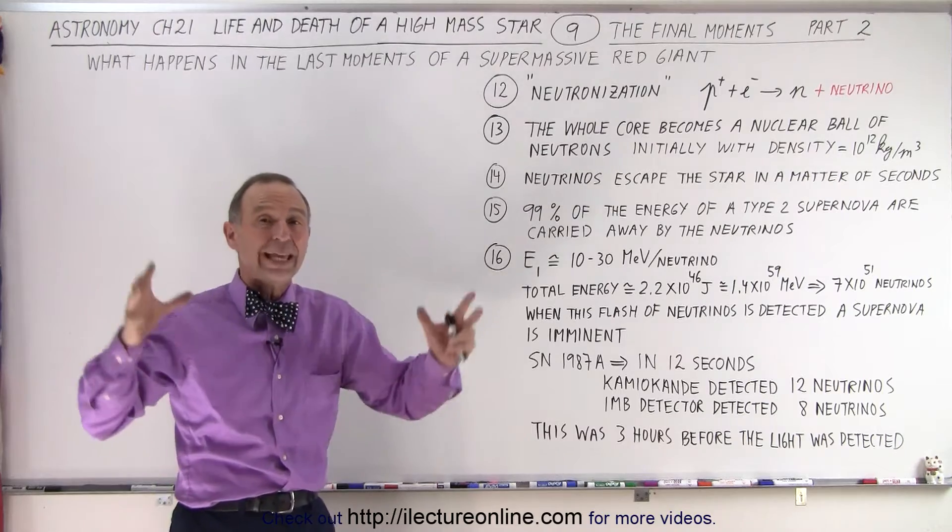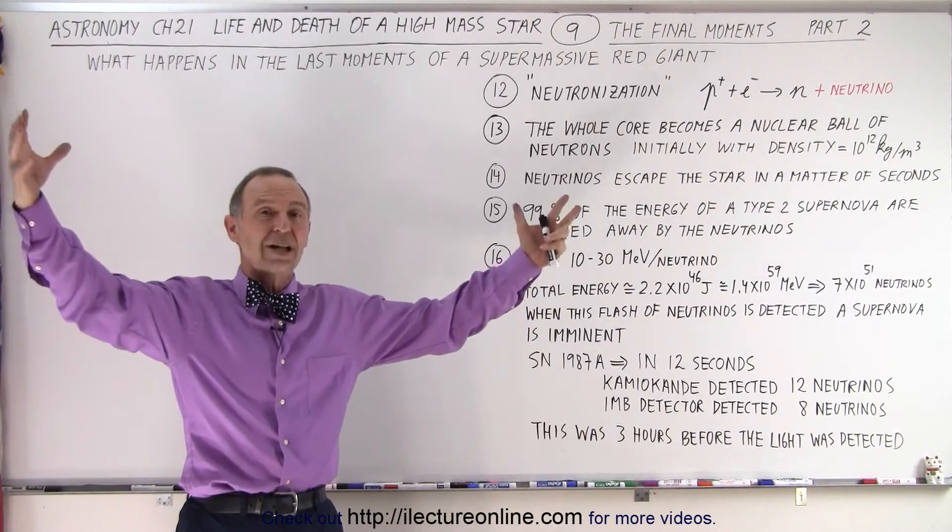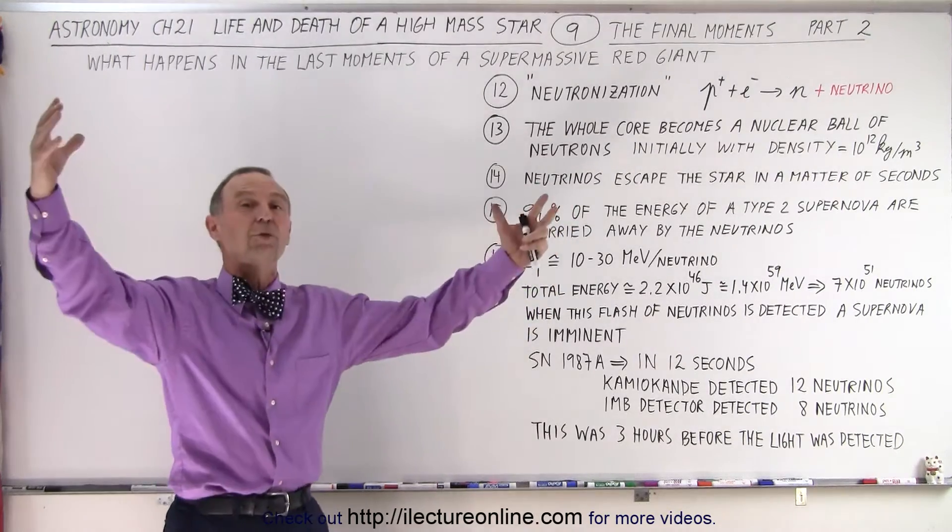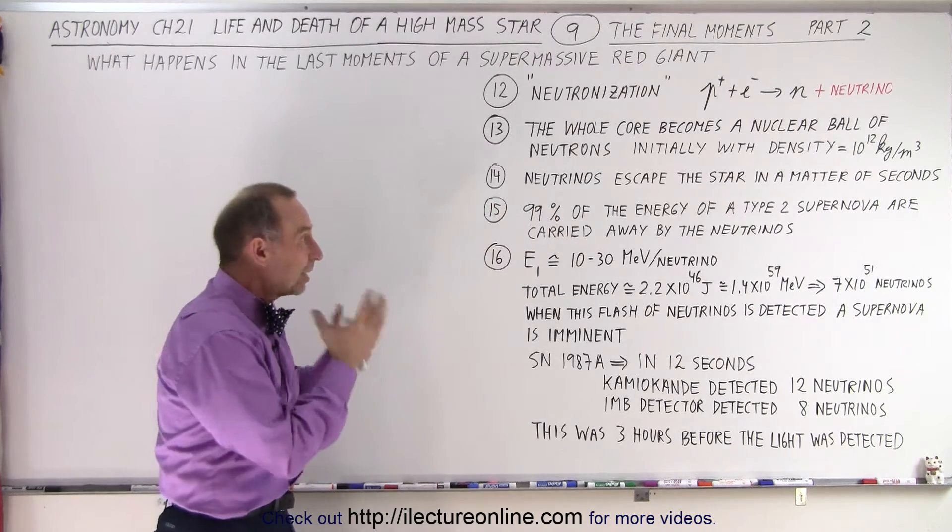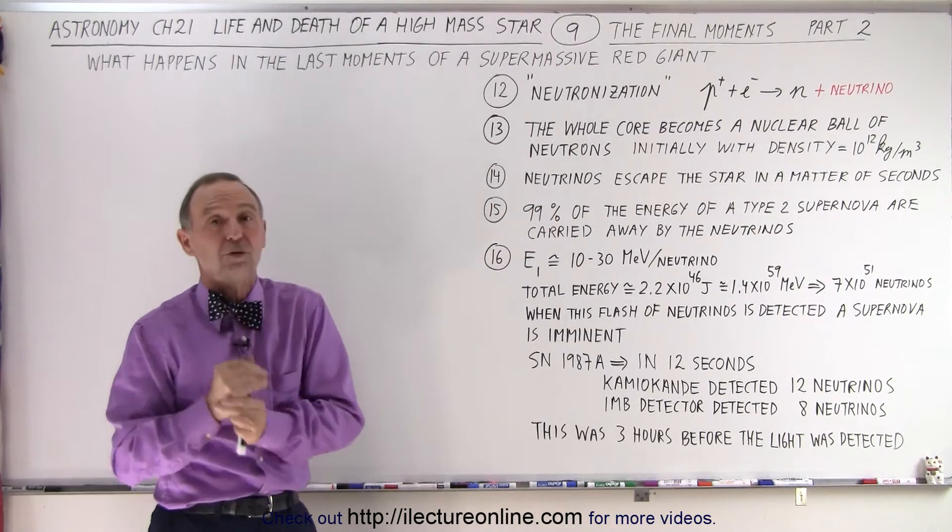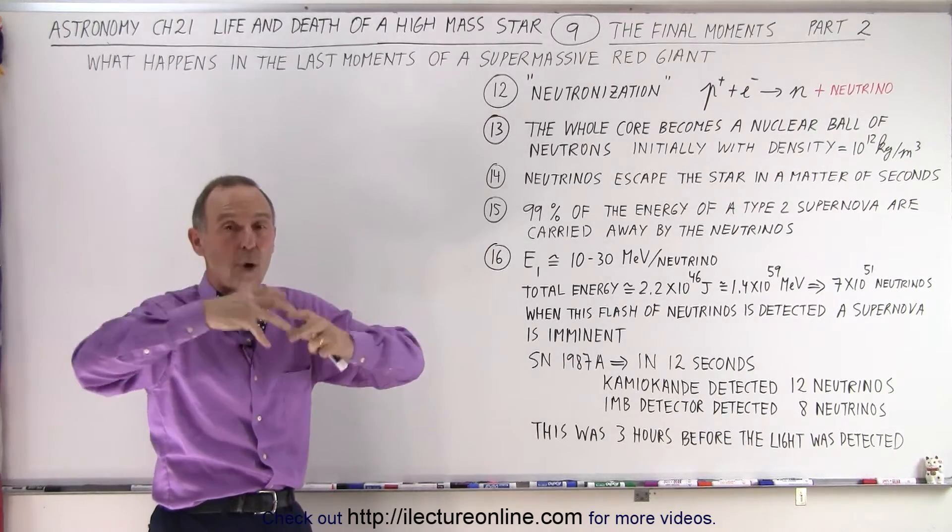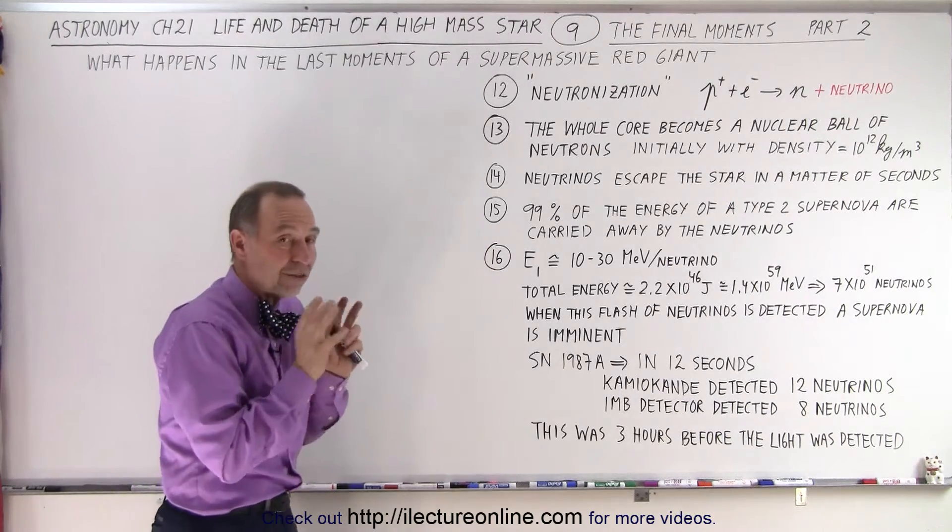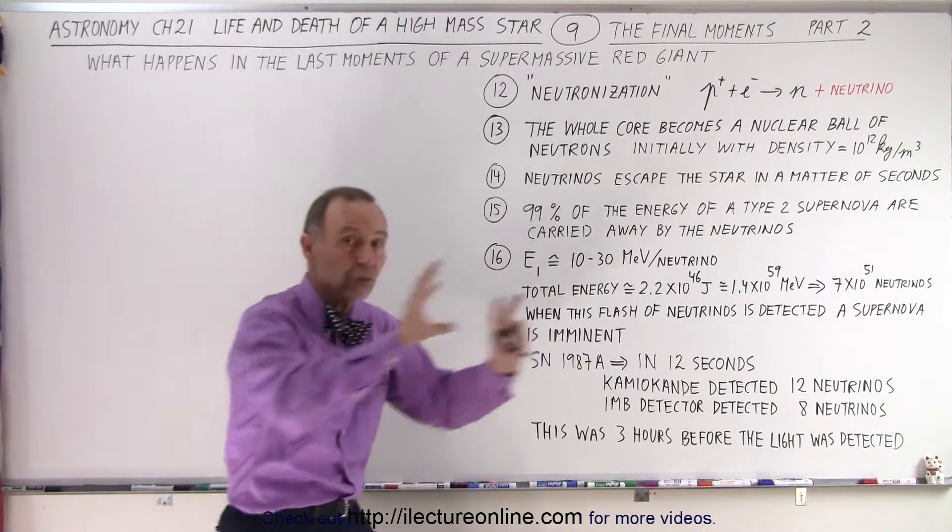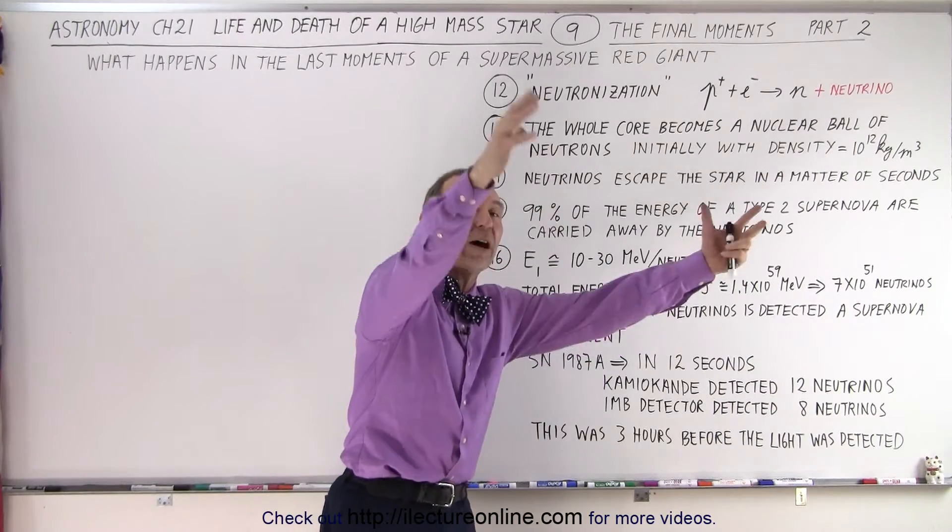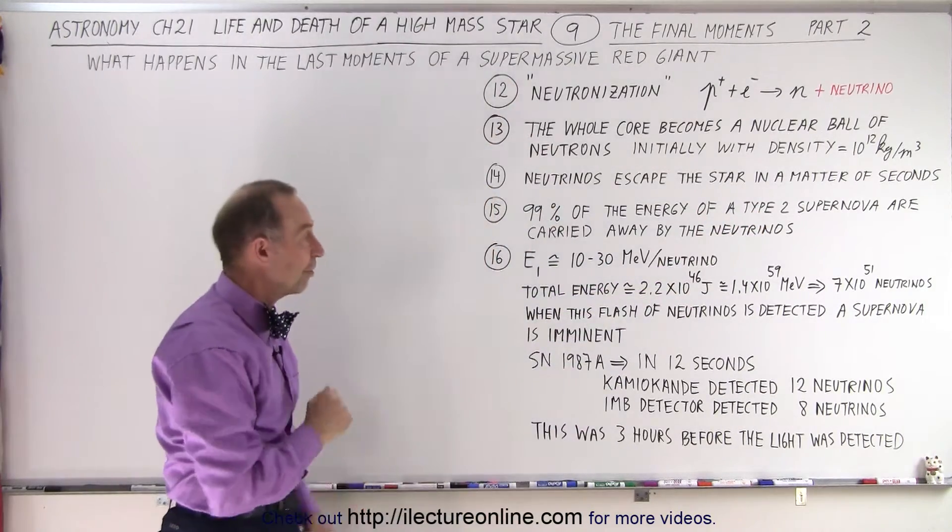About 99% of all the energy formed in that giant collapse and explosion of a type 2 supernova is carried away by the neutrinos. It's the neutrinos that carry the vast amount of that energy away from the star. And the vast majority of the neutrinos make it through the star unhindered and move on to be detected far far away.